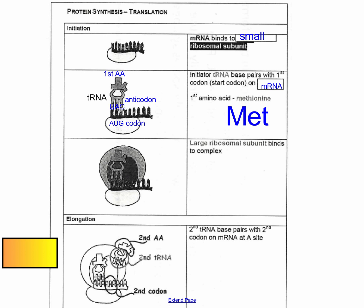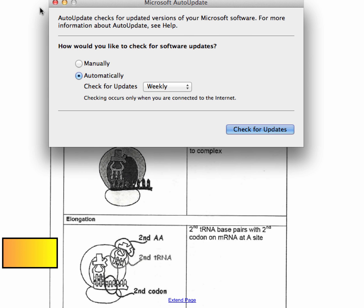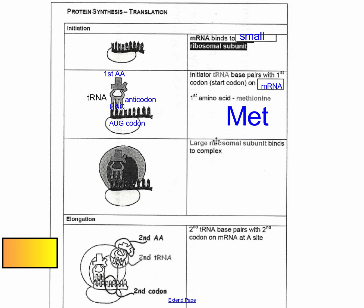So the first amino acid has been brought over, and now the large ribosomal subunit binds to complete the constructed ribosome. This ribosome is going to start moving to the right, and the mRNA molecule is going to shift to the left as we go to the next codon, the next codon, and so on. The second tRNA comes in matching the codon with the anticodon and brings the second amino acid.